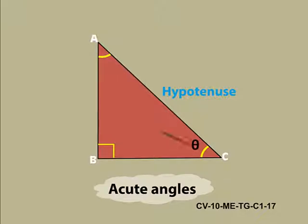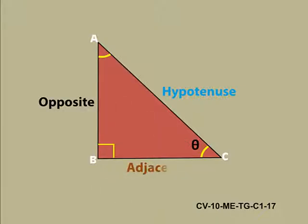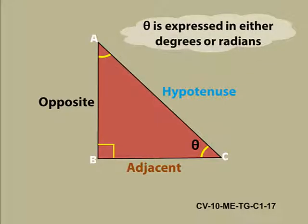Let us mark one of these angles with a special symbol Theta. The side opposite to Theta is called the opposite side and the other side is the adjacent side. The measure of angle Theta is expressed in either degrees or radians. Radians is expressed in terms of pi.